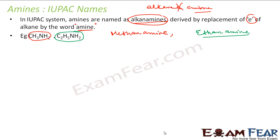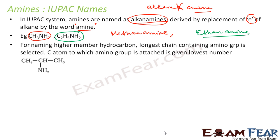For a simple compound that's straightforward. But for higher members, the longest chain which contains the amino group is selected. For example, in this case the longest chain has the amino group, and the carbon atom bearing the NH2 group is given the lowest number possible. In this case, numbering from either side gives that carbon position 2.